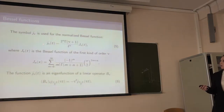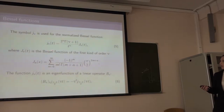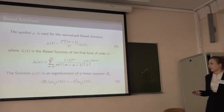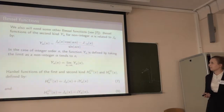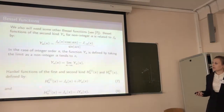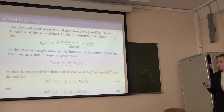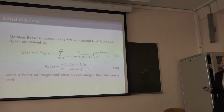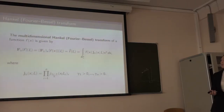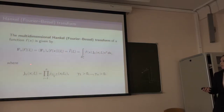Here we can see the so-called normalized Bessel function, and big G is the usual regular Bessel function of the first kind. For the Bessel operator and for small g, we have two properties. We will need some more Bessel functions of the first and second kind — the Hankel function and function Y. We also need modified Bessel functions of the first and second kind. Here we present the Hankel transform, or free Bessel transform, with its kernel.